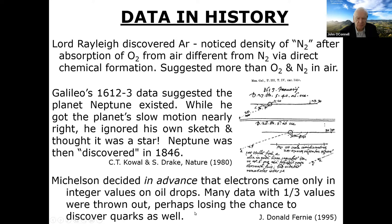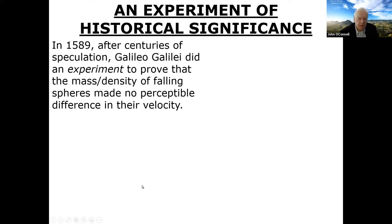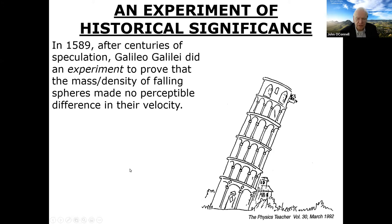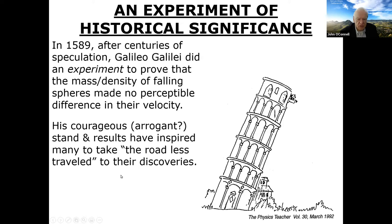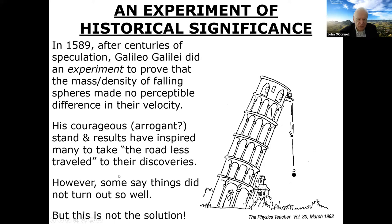An experiment of historical significance: in 1589, Galileo did an experiment to prove that mass and density of falling spheres made no perceptible difference in velocity, dropping stones from the Leaning Tower. Many people cite this as taking the road less traveled to discoveries. However, a cartoon quote captures the temptation: 'It shouldn't happen this way — I'll have to alter the data.' But that's not the solution. Fake news is really fake, but truth is truth.